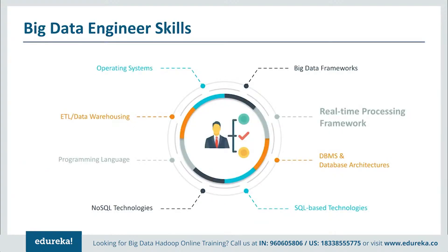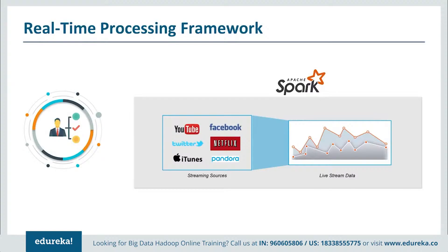Next up, we have real-time processing frameworks. Real-time processing with quick actions is the need of the hour — whether it's a credit card fraud detection system or a recommendation system. Imagine if you wanted a red dress today and Amazon suggested it to you a month later — that would be completely useless. Apache Spark is one of the distributed real-time processing frameworks used rigorously in the industry, and it can be easily integrated with Hadoop, leveraging HDFS as well.